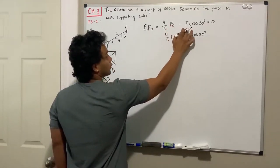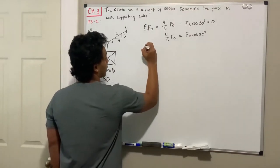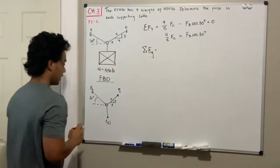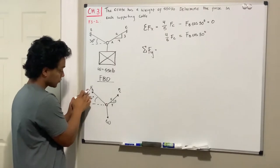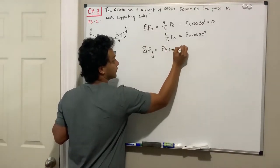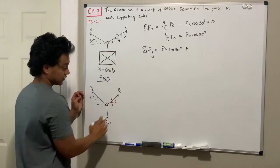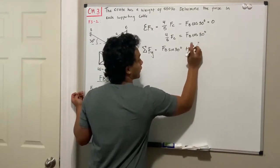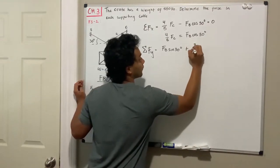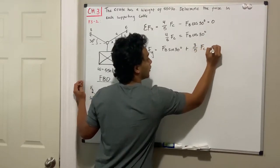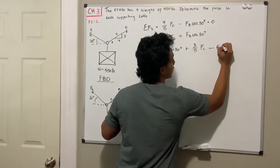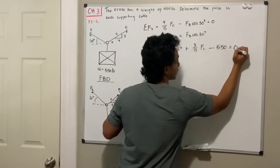Now, since we have two unknowns, we need two equations to solve it. We are going to go and find the summation of forces in the y-direction. In the y-direction, I have the force B going up multiplied by the sine of the angle, plus the force C is also going up. It's going to be 3 out of 5, so 3/5 of force C going up minus W. And we know that W is equal to 550, so we get minus 550 to be equal to 0.